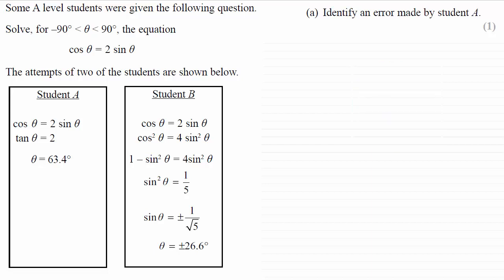Okay, so we've got to identify an error made by student A. And that error comes from dividing both sides of this equation by sin theta. It doesn't lead to this line here, tan theta equaling two.